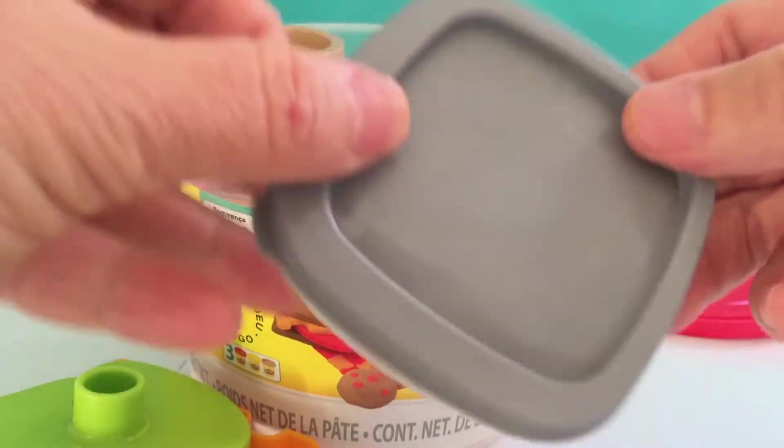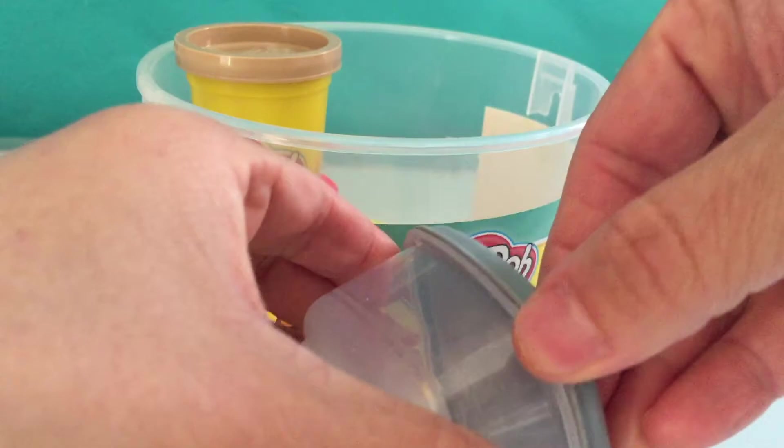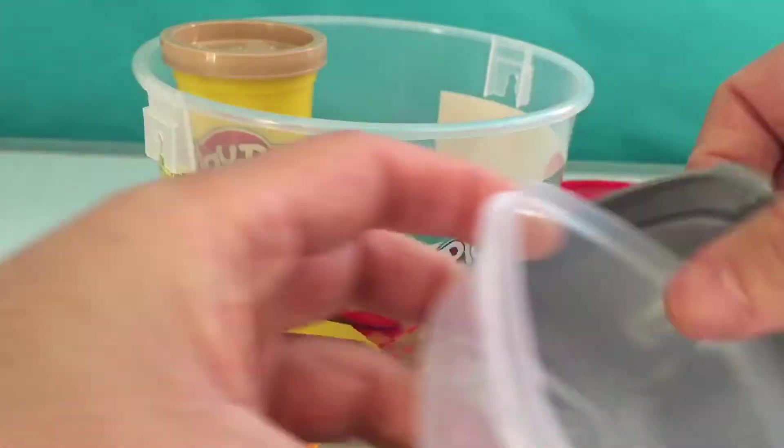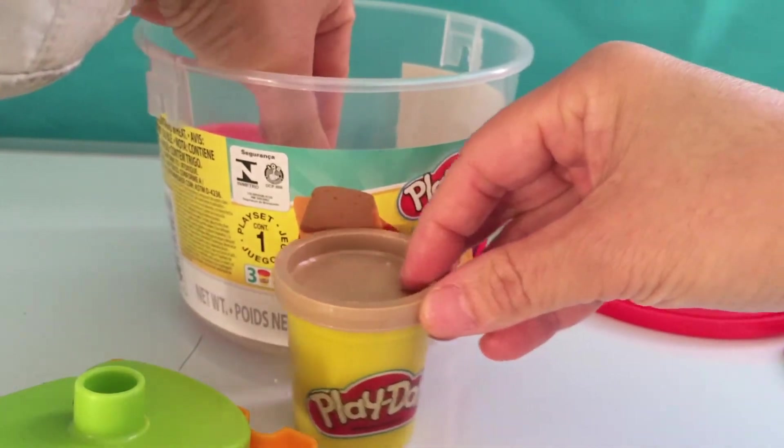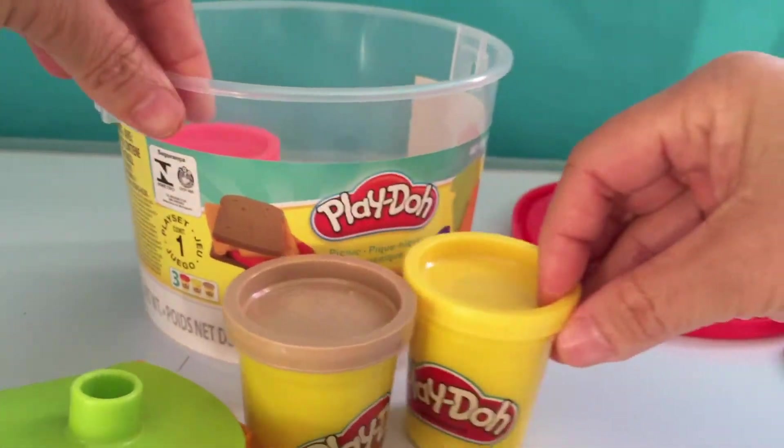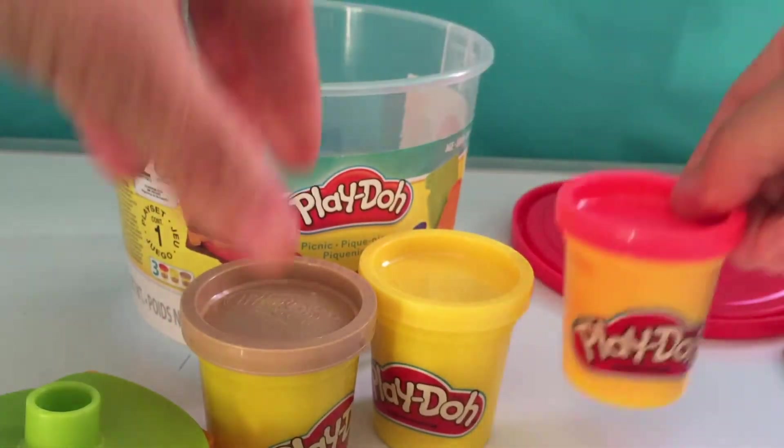We also have got a little box to put all the picnic food in it. We have got the brown Play-Doh, yellow Play-Doh, and red Play-Doh.